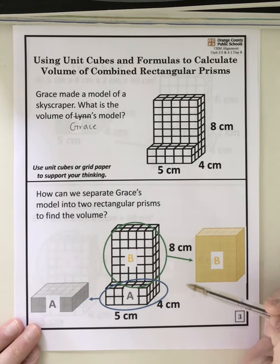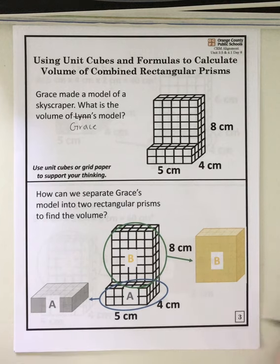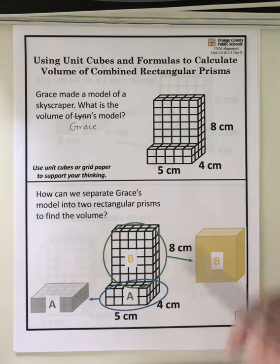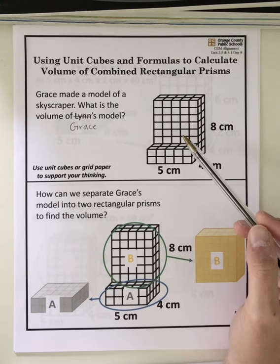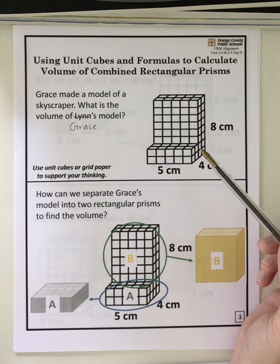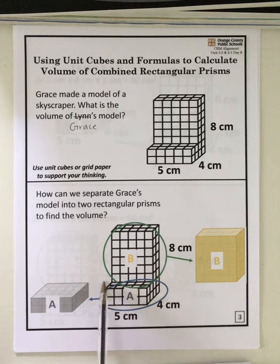The district helped you chunk this problem into different steps. The first step says: how can we separate Grace's model into two rectangular prisms to find the volume? So when you see an irregular rectangular prism like this, you always want to think how can I break this apart. It looks like the district broke it apart right here and turned it into prism A and prism B.